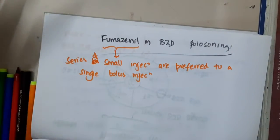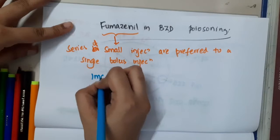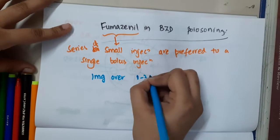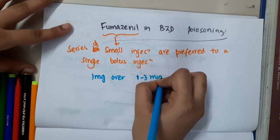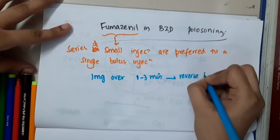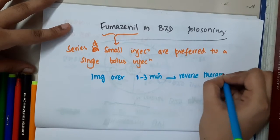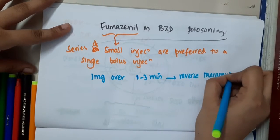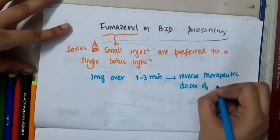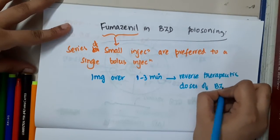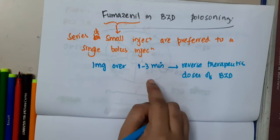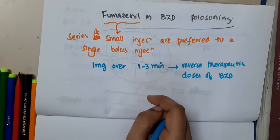So that is Flumazenil. A total of 1 mg over 1 to 3 minutes is sufficient to reverse therapeutic doses of benzodiazepines.